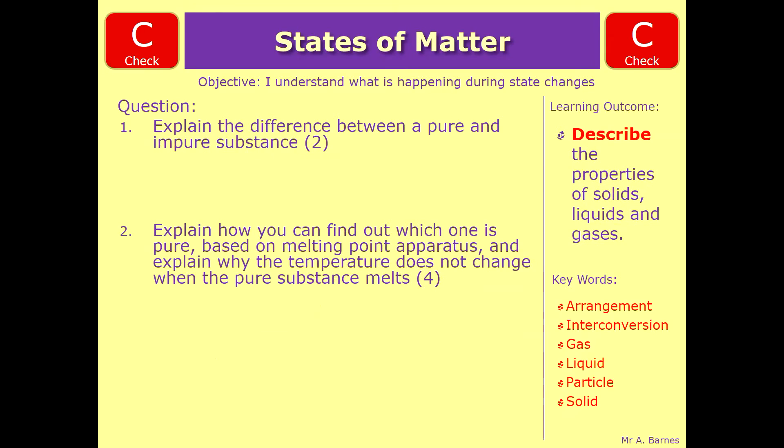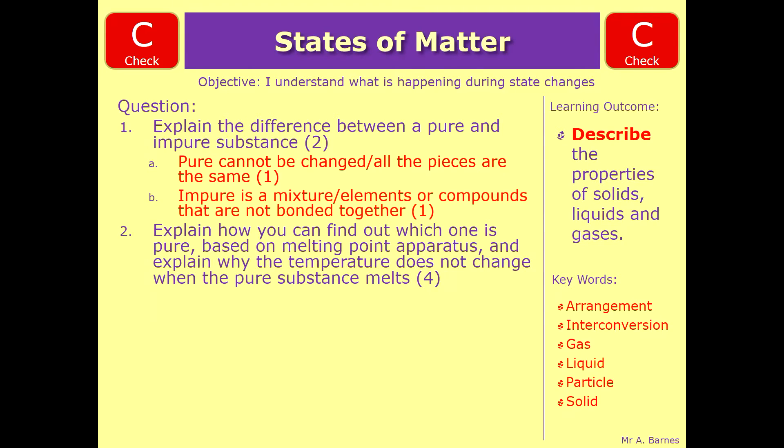If we have a look at the first question which was explain the difference between a pure and an impure substance, the first marking point is for saying something pure cannot be changed or all the pieces are the same. Either of those would have got you the first mark. The second mark is for saying an impure is a mixture or the elements or compounds that are not bonded together.